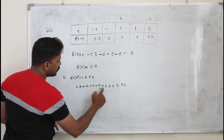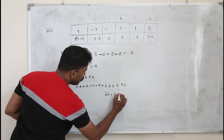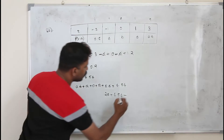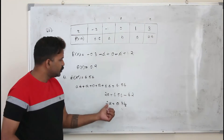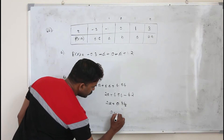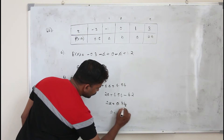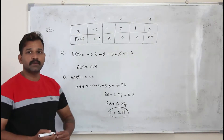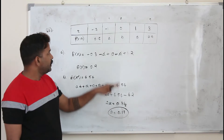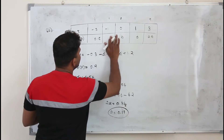So A plus A gives 2A, which equals 4.54 minus 4.2, so 2A equals 0.34, therefore A is 0.17. That's the value of A. Now we have the value of A — substitute it in: A is 0.17.